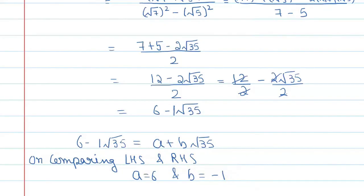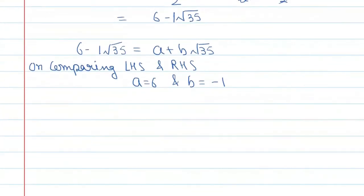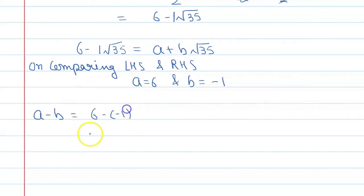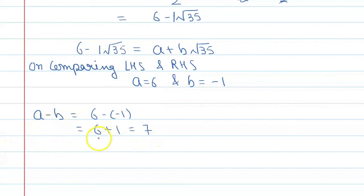According to the question, we need to find a minus b. So a - b = 6 - (-1), and this becomes 6 + 1, so the value is 7.